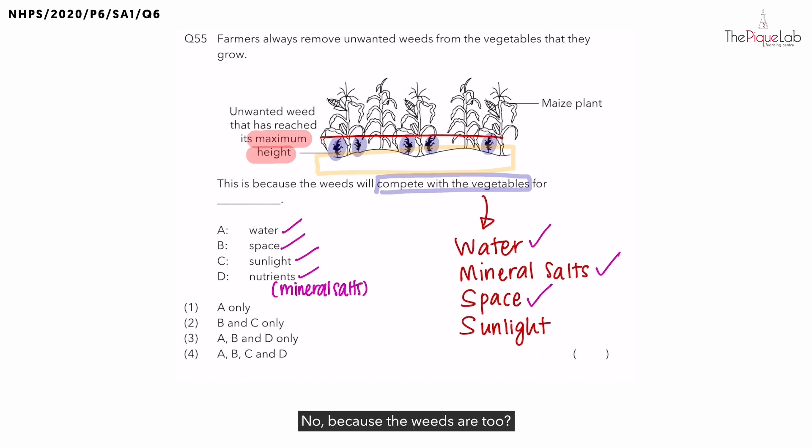No, because the weeds are too... Yes, they are too short. And since they are too short, they are not actually competing for sunlight with the maize plant. They are too short to even compete for sunlight.